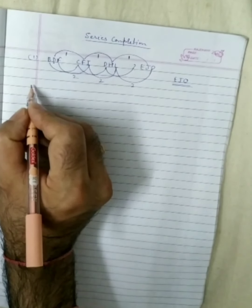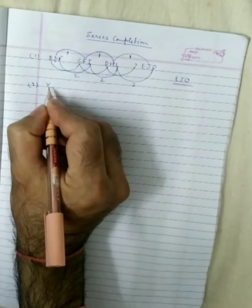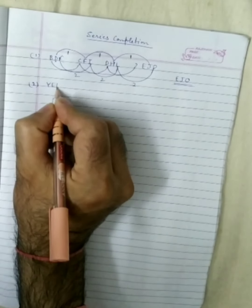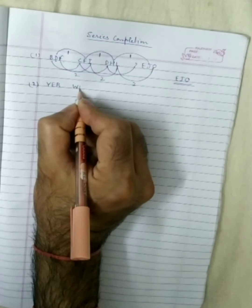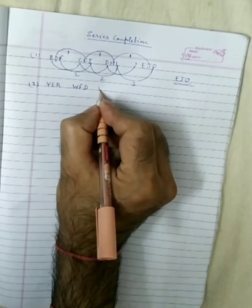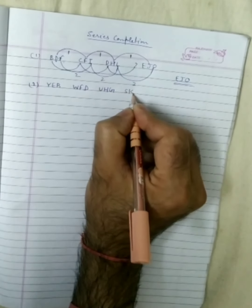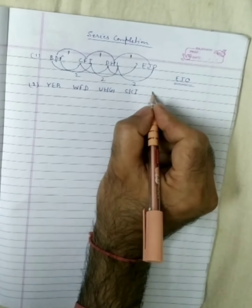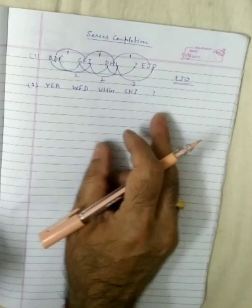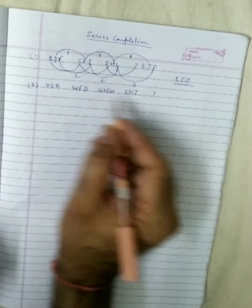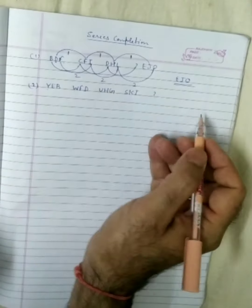Second series: Y, E, B / W, F, D / U, H, G / S, K, I. You have to find the last missing term. As usual, we take the first letter first: Y, W, U, S. These are reverse letters with a one-letter gap each time — Y to W, W to U, U to S.